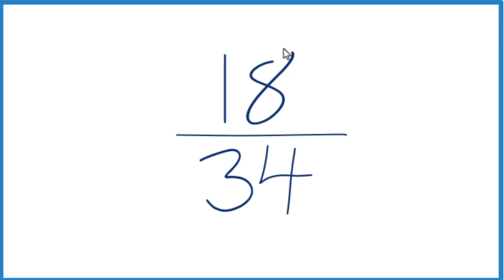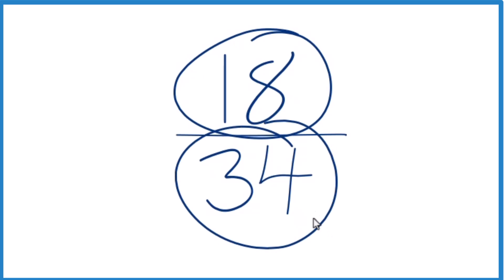If you're asked to simplify the fraction 18/34, here's how you do it. What we want to do is find another fraction that's equivalent to 18 divided by 34. It has the same decimal value, it's just that we've simplified or reduced it down to lowest terms.